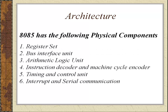Let us list out the components. The first one is the register set, the second is the bus interface unit, the third one is the arithmetic and logic unit, the fourth one is the instruction decoder and machine cycle encoder unit, the fifth one is the timing and control unit, and the sixth one is the interrupt and serial communication module. Today we are going to talk about the register set and the bus interface unit.